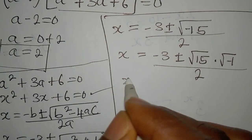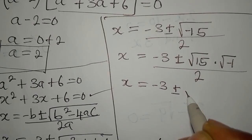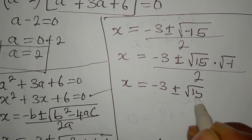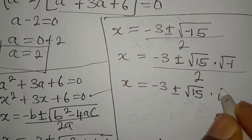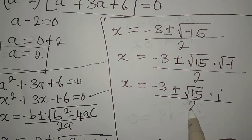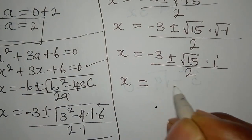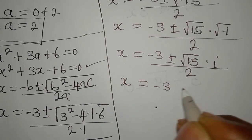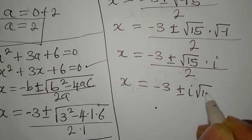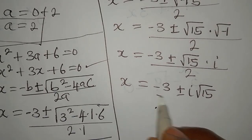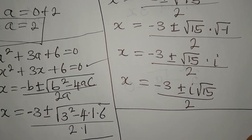Since 15 is not a perfect square we leave it as √15. So x = (−3 ± i√15) / 2. These are our complex solutions. Remember x represents a, so we now have the full solution set.